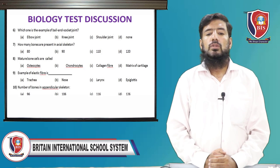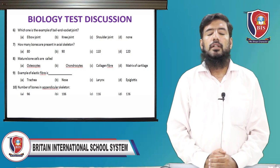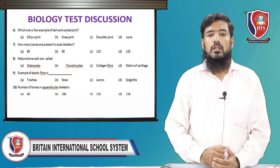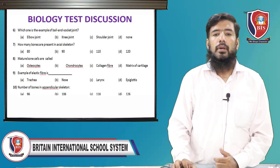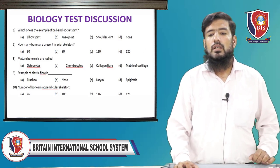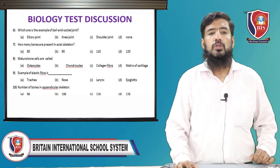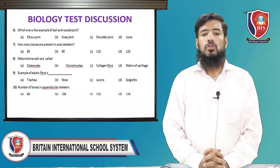MCQ 10: number of bones in the appendicular skeleton — how many bones are in the appendicular skeleton? The number of bones in the appendicular skeleton is 126. Option D is the correct option.